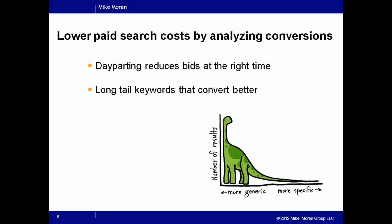Another way to lower paid search costs is by really analyzing what's working and what isn't. Your search keywords are really your market segments, so you want to apply all the same work that you do with market segmentation to paid search. Analyze which keywords are converting higher, which time of day or day of the week things convert better, and use day parting to change your bids at different moments. If you have a seasonal business, you can turn off certain keywords at different times. Anything you can do to analyze conversion rates will help you target your bidding — bidding more when you're more likely to convert and less when you're not.